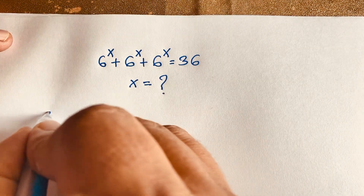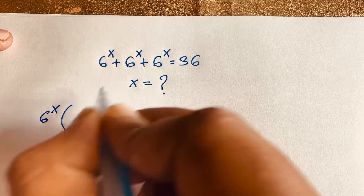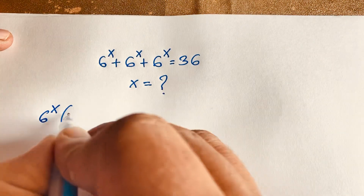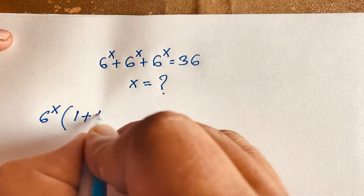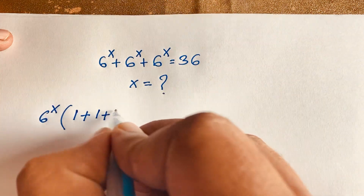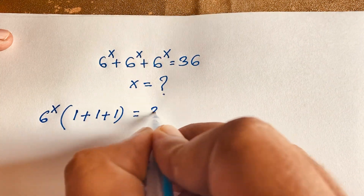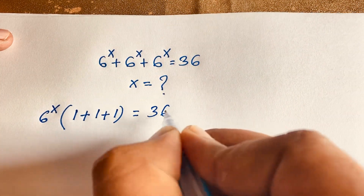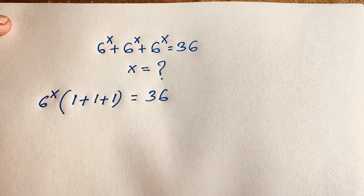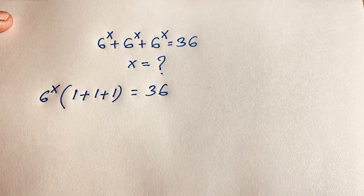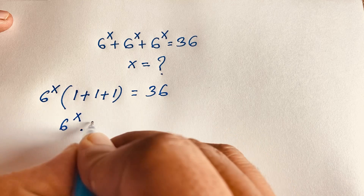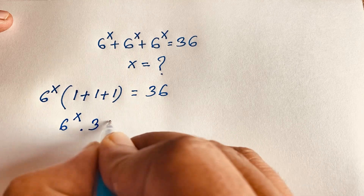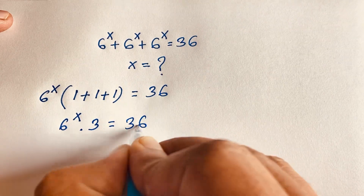First of all, I can see easily here that 6 to the power x is common. So dividing each term by 6 to the power x, it will be 1 plus 1 plus 1. So we have 6 to the power x times 1 plus 1 plus 1, which equals 3, and that is equal to 36.